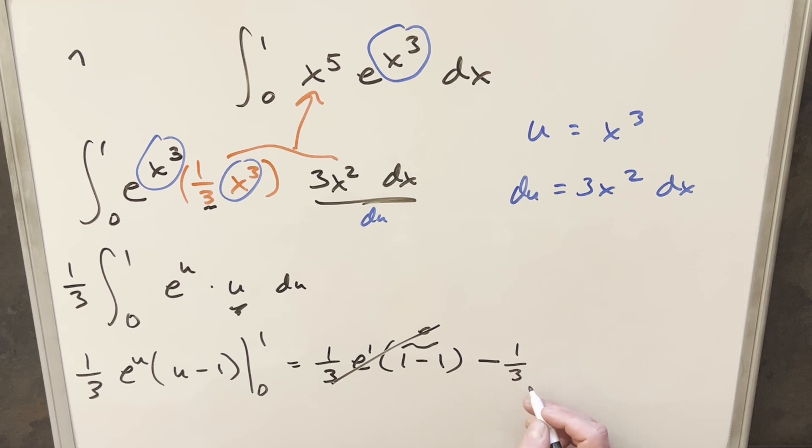So this is going to become minus 1 3rd. e to the 0 is just 1. Then we plug a 0 in here, we get 0 minus 1. Then putting this all together, minus times minus is going to give me a plus. And so for my final solution of this, we just get 1 over 3.